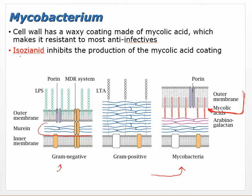One of the drugs we're going to talk about, isoniazid, inhibits the production of that mycolic acid coating. So we have a special drug that is specific for the mycobacteria family.